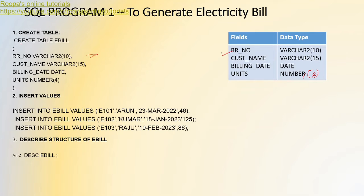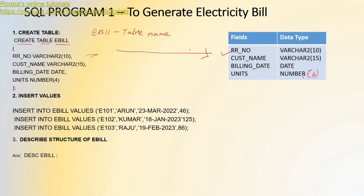The first command is CREATE TABLE. 'CREATE' is the name of the command and 'TABLE' is the keyword used for all DDL commands — CREATE, ALTER, and DROP. The command is CREATE TABLE followed by the table name. The table name here is 'ebill'. Remember, table name is 'ebill' throughout this program. Then we start with open brackets and write whatever fields are given in the question, ending with a closing bracket and semicolon. This is the command for CREATE TABLE.